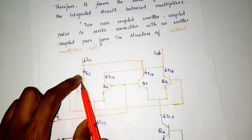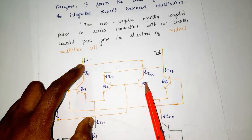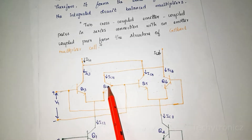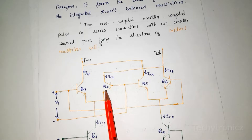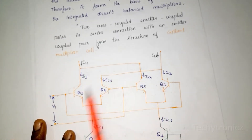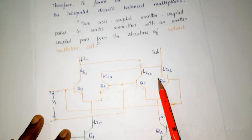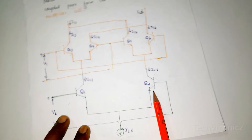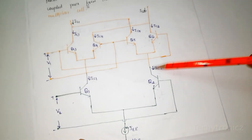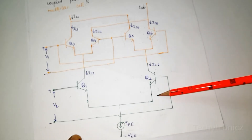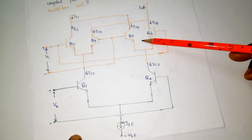In the cross coupled connection, the output terminal of transistor Q3 is connected to Q5, and the output of Q3 is connected to Q4. So these form the two cross coupled emitter coupled pairs. There is also another emitter coupled pair in series connection with this cross coupled pair.